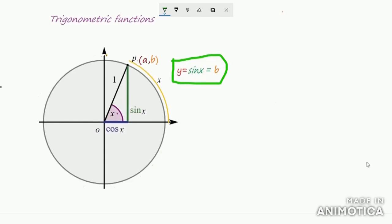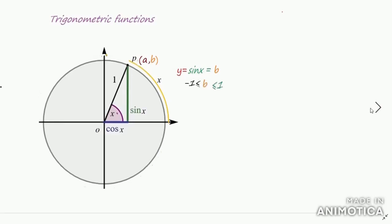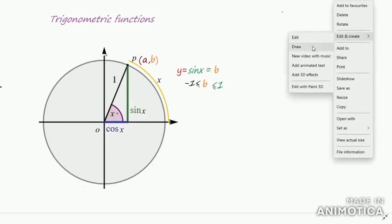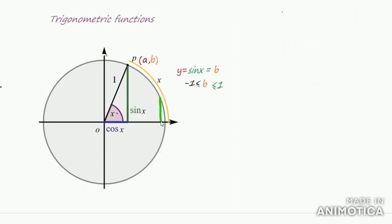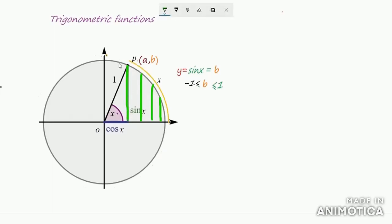We know that sin x = b. You can observe the values of b as the point varies. If the position of the point is here, this height itself is b and it is very small. As the point moves, b increases. In the first quadrant, b is this height, and the value of b increases. When we reach the top of the circle, b is maximum, and the maximum value is 1.